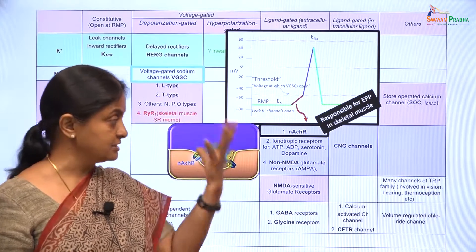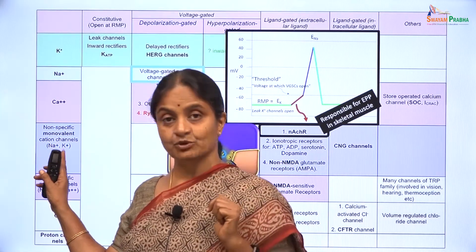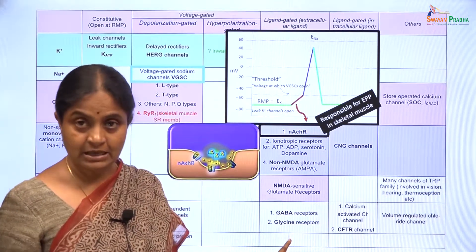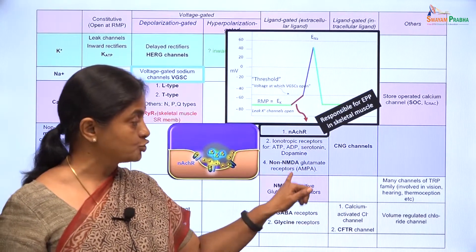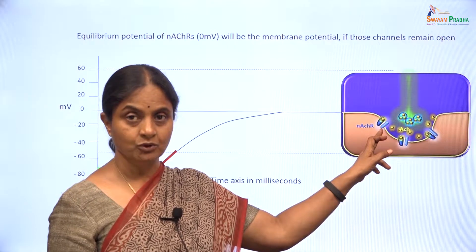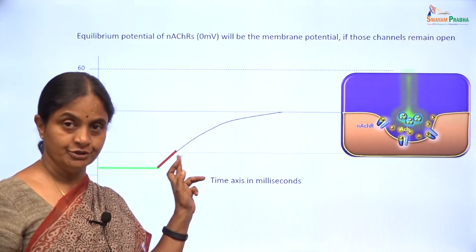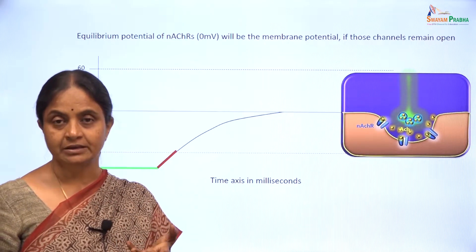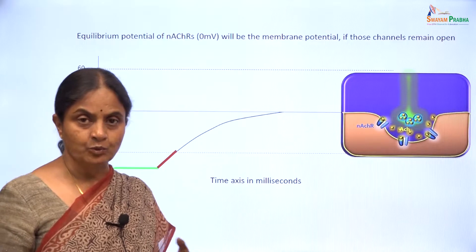If we had to locate those channels in the table, they are here — the nicotinic acetylcholine receptors, listed as non-specific monovalent cation channels and which also come as ligand gated channels. We have considered these channels in cell signaling as ionotropic receptors. Having said that these are non-specific monovalent cation channels, if you do consider the current which flows during the initial depolarization, it is predominantly a sodium current. And that is why probably some textbooks refer to these channels as sodium channels.